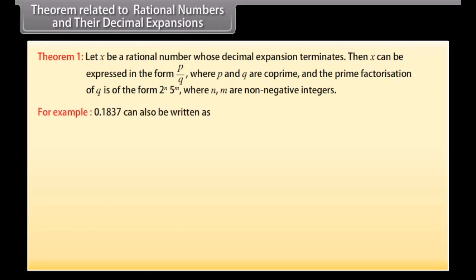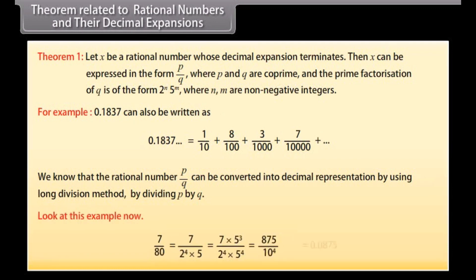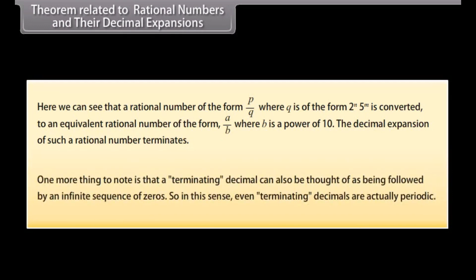For example, 0.1837 can be written in p/q form. A rational number p/q can be converted into its decimal representation using the long division method by dividing p by q. Here we can see that a rational number p/q where q is of the form 2ⁿ × 5ᵐ is converted to an equivalent rational number of the form a/b where b is a power of 10 — the decimal expansion of such a rational number terminates. Note that a terminating decimal can also be thought of as followed by an infinite sequence of zeros, so even terminating decimals are periodic in that sense.